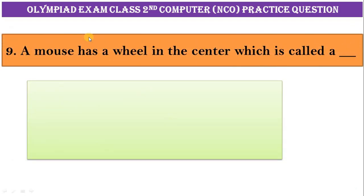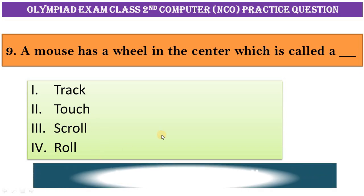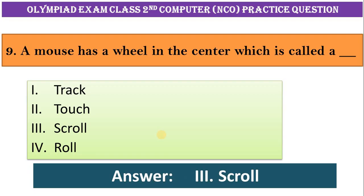Number nine: a mouse has a wheel in the center which is called drag, touch, scroll, or roll. Correct answer is option third, scroll.